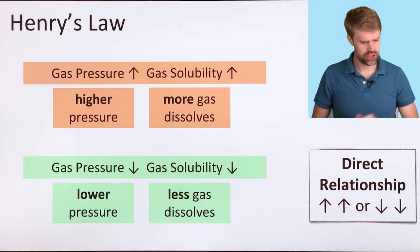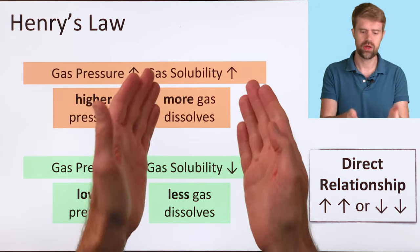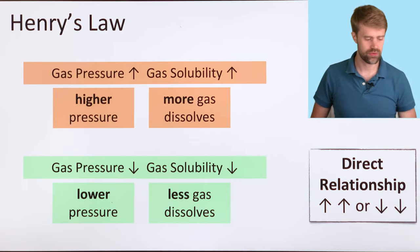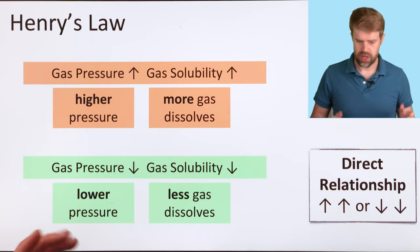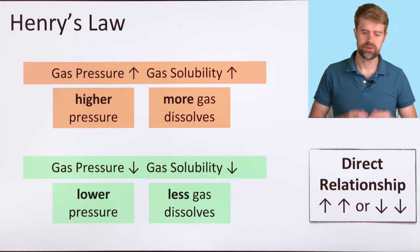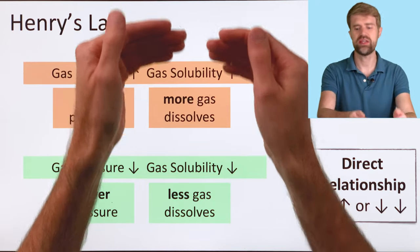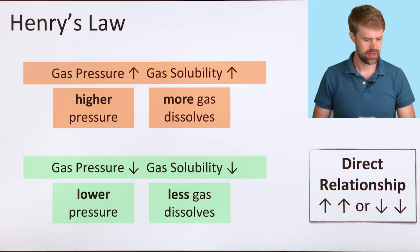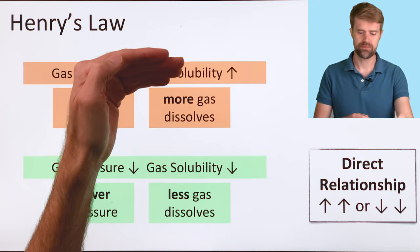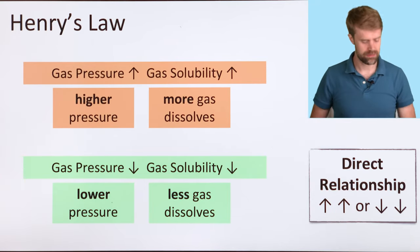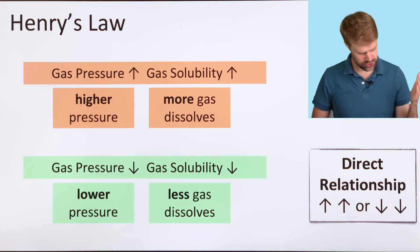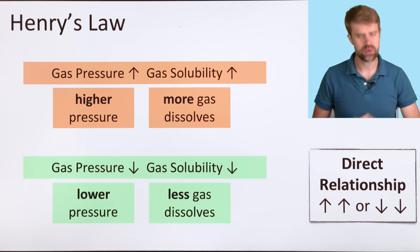This relationship between the pressure and solubility of a gas is often referred to as Henry's Law. It's what we call a direct relationship. The two things move in the same direction. As the pressure of the gas above the liquid goes up, the solubility of the gas in the liquid goes up as well. As pressure goes down, so does the solubility.